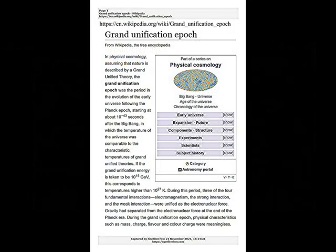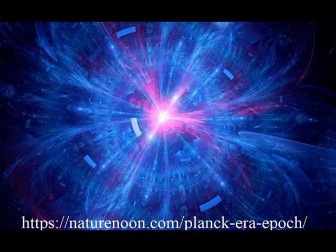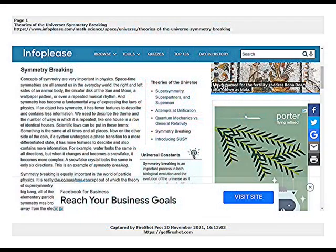The Grand Unification epoch took place between 10 to the minus 43 seconds and 10 to the minus 36 seconds after the event which began the known universe. As the universe expanded and cooled, it crossed transition temperatures at which forces separated from each other. Like steam turning to water, the fields which define our universe's fundamental forces and particles completely change their behaviors and structures when the temperature and energy fall below a certain point. These phase transitions in the universe's fundamental forces are believed to be caused by a phenomenon of quantum fields called symmetry breaking.